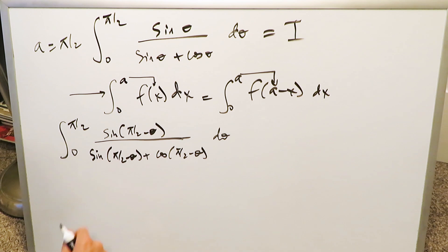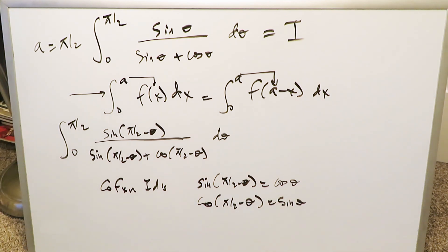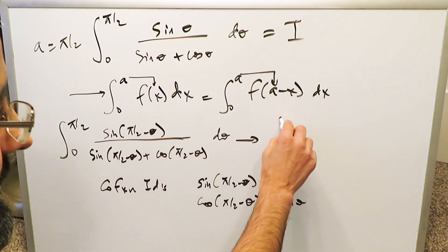But look what we have over here. What we have here is something for which you can use your co-function identities. And you know these identities. The sine of an angle in terms of its complement is equal to the cosine. The sine of an angle is equal to cosine of its complement. Or you can say cosine of an angle is equal to the sine of its complement. And you will bring these co-function identities into here and manipulate this.